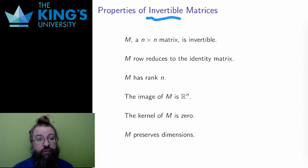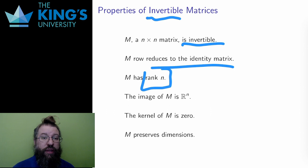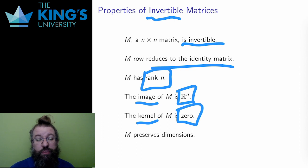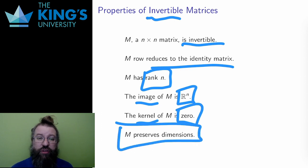All of these are equivalent. A matrix is invertible if it row reduces to the identity, if it has rank n, if its image is all of R^n, if its kernel is zero, and more in terms of interpretation, if it preserves dimensions, nothing is lost to a projection of any kind. And this is what you should think of when you think of invertible matrices.